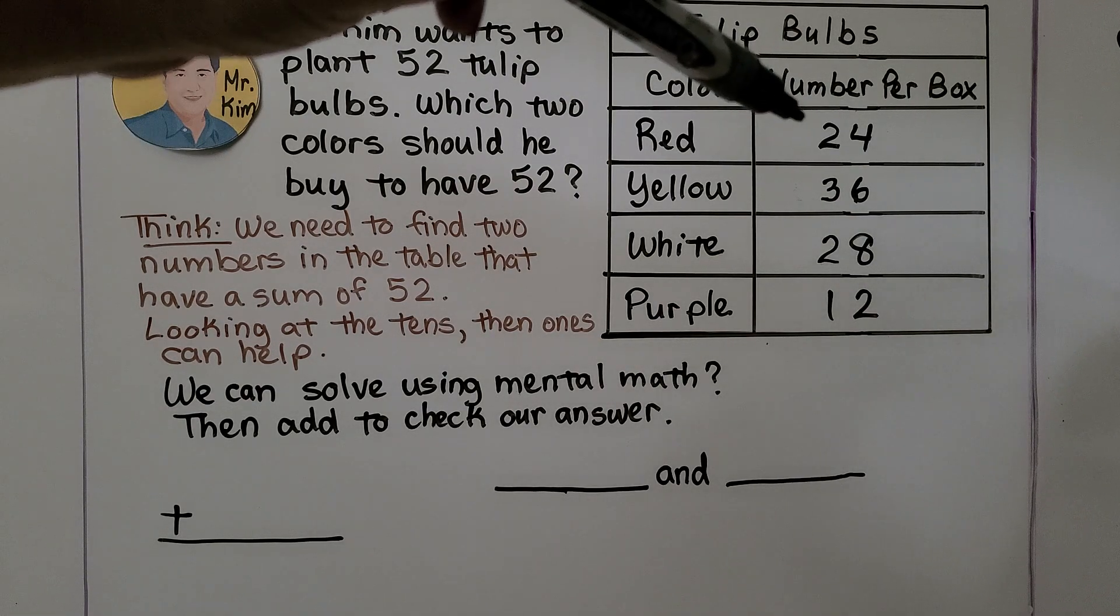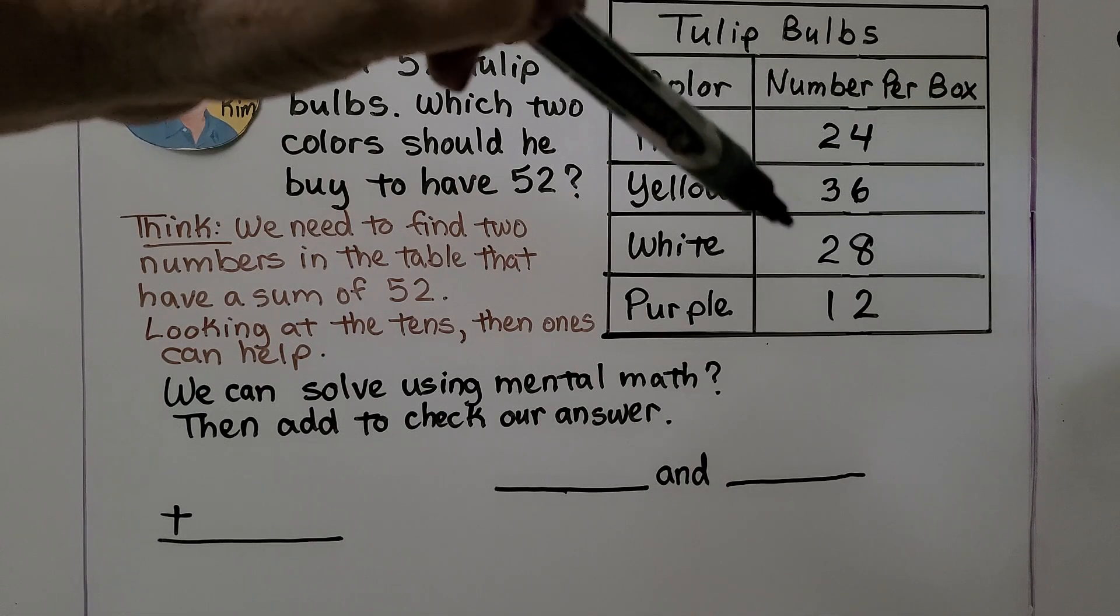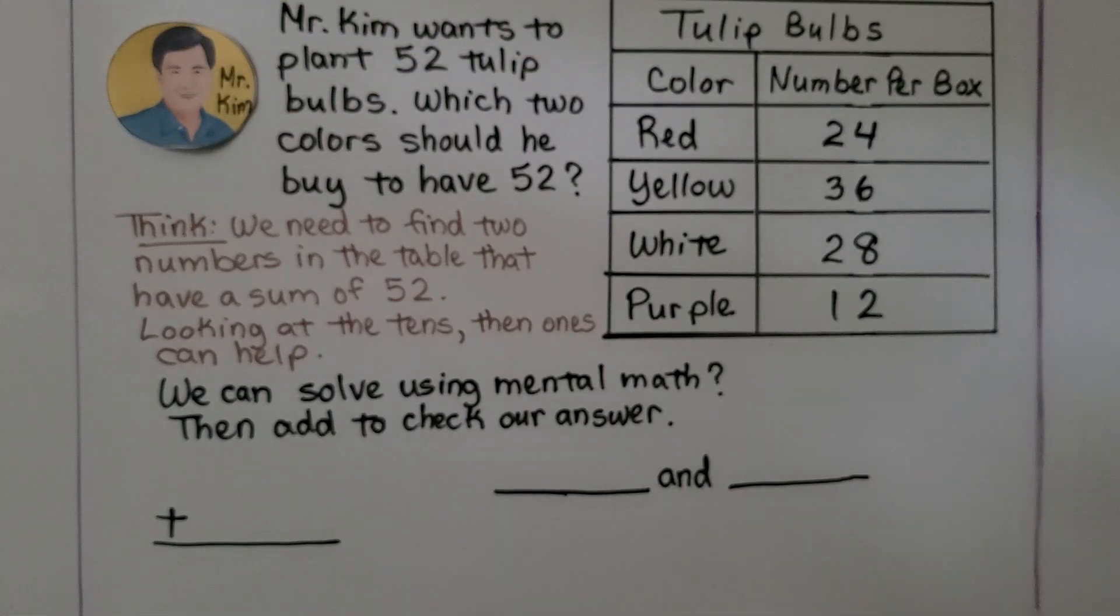We could try red and white. We have 20 and 20 would be 40. Then when we add the ones, we have four ones and eight ones. That's 12. We have 40 plus 12. And that works. It looks like he would need to buy the red and the white.